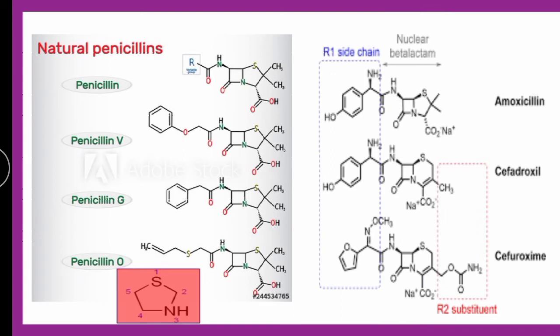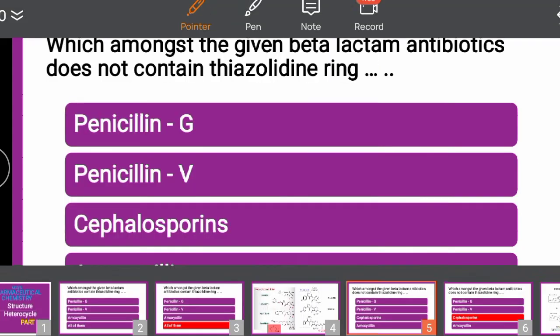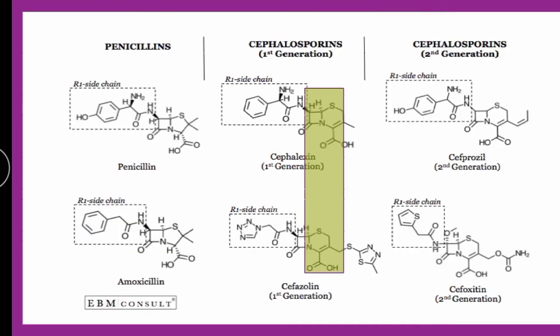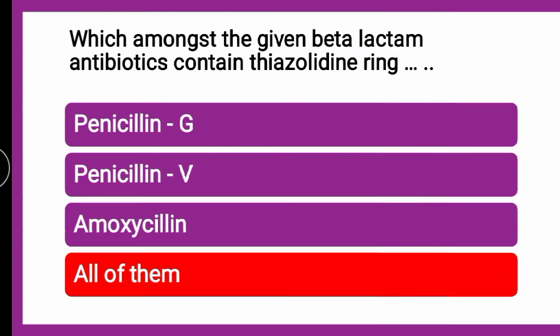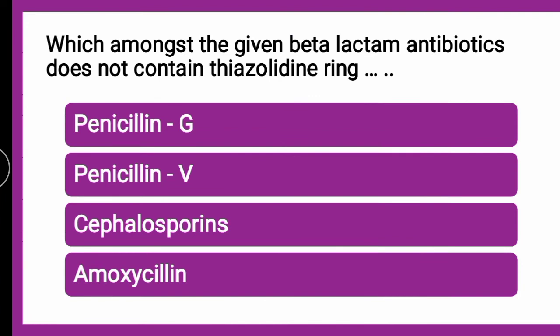So thiazolidine is present in penicillins — Penicillin V, Penicillin G, Amoxicillin, etc. But the thiazolidine ring present in penicillins is not present in cephalosporins. If you look at cephalosporins, it has a six-membered ring instead. So the answer is all of them — Penicillin contains a thiazolidine ring attached to the beta-lactam ring.